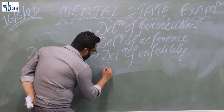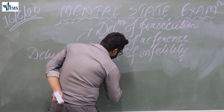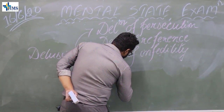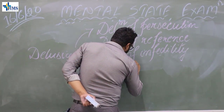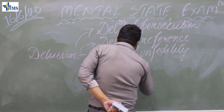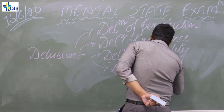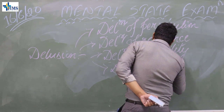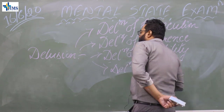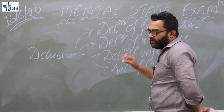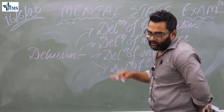The other types include delusion of love, erotomania, and there are a lot of other delusions. We will come to these later on.